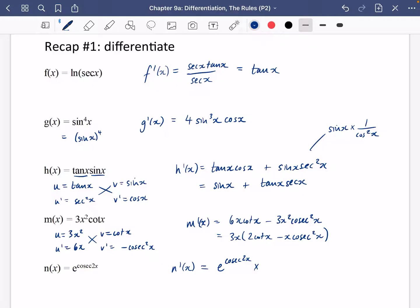And the derivative of cosec 2x, well we know it's going to go to minus cosec 2x cot 2x, but you also need to multiply by the derivative of the 2x which is 2. So you end up with minus 2 cosec 2x cot 2x.